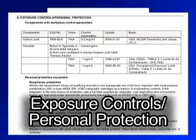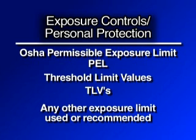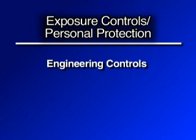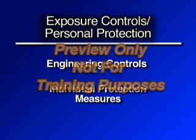Section 7: Handling and Storage. Describes precautions for safe handling and the conditions for safe storage, including any incompatibilities. Section 8: Exposure Controls/Personal Protection. Pertains to protection methods and includes the OSHA Permissible Exposure Limit or PEL, Threshold Limit Values or TLVs, and any other exposure limit used or recommended by the chemical manufacturer, importer, or employer preparing the safety data sheet, appropriate engineering controls, and individual protection measures such as recommended personal protective equipment.